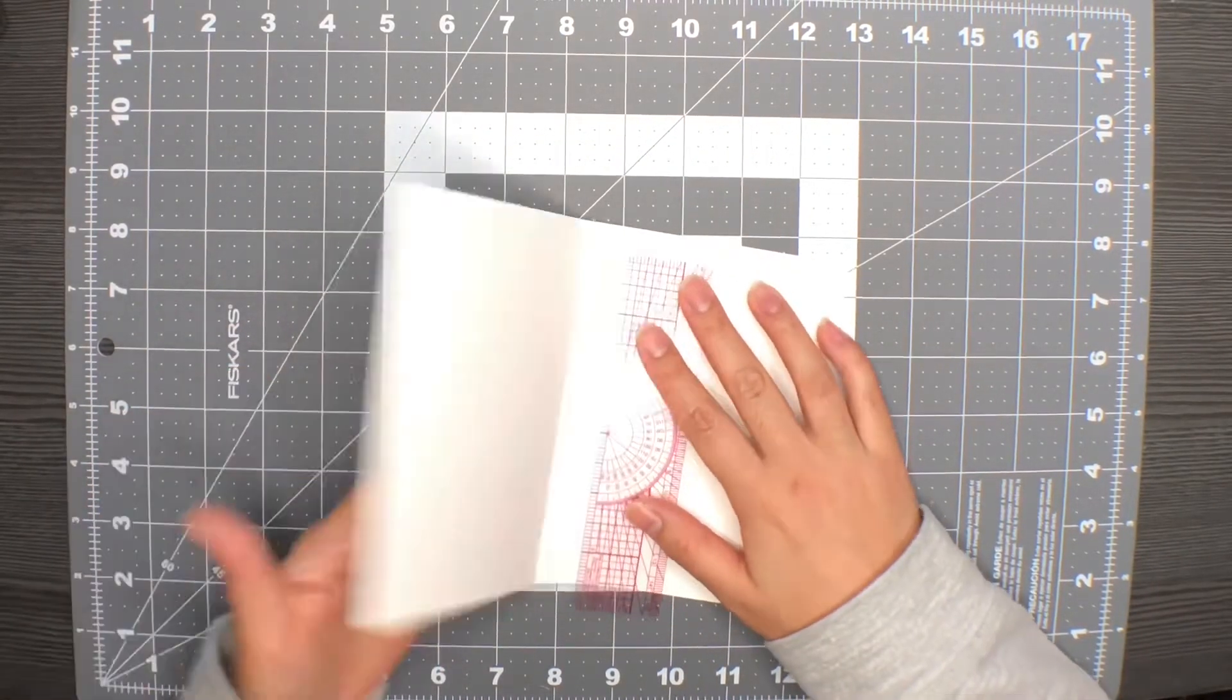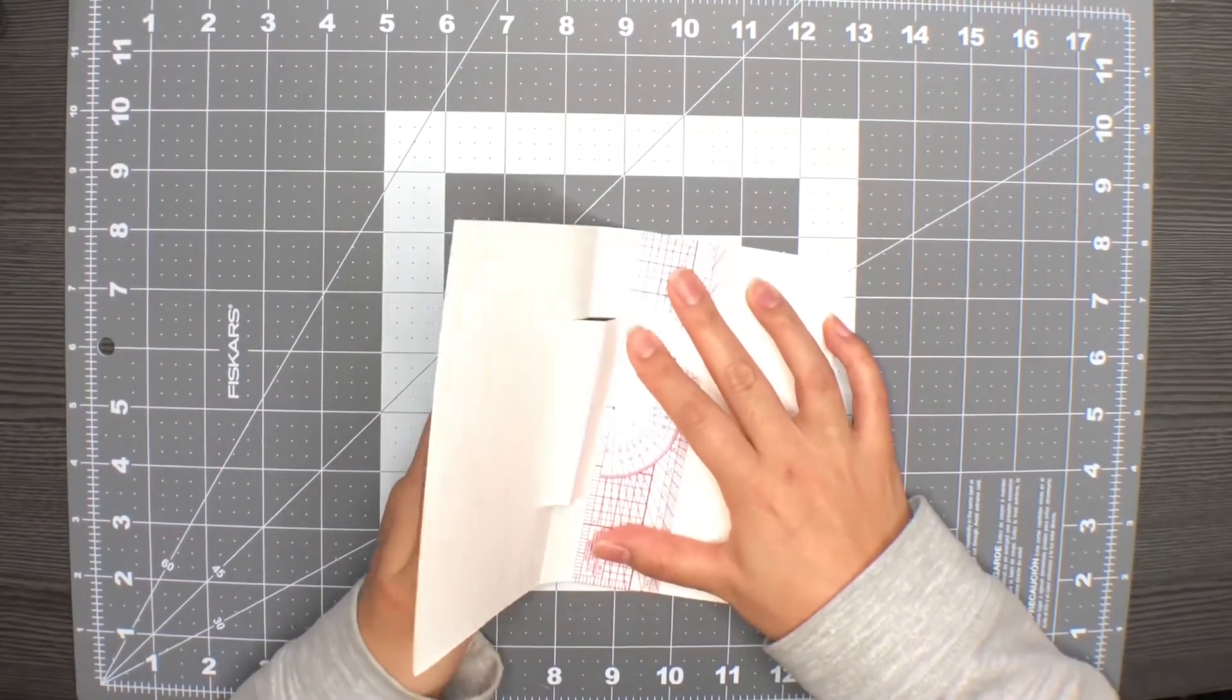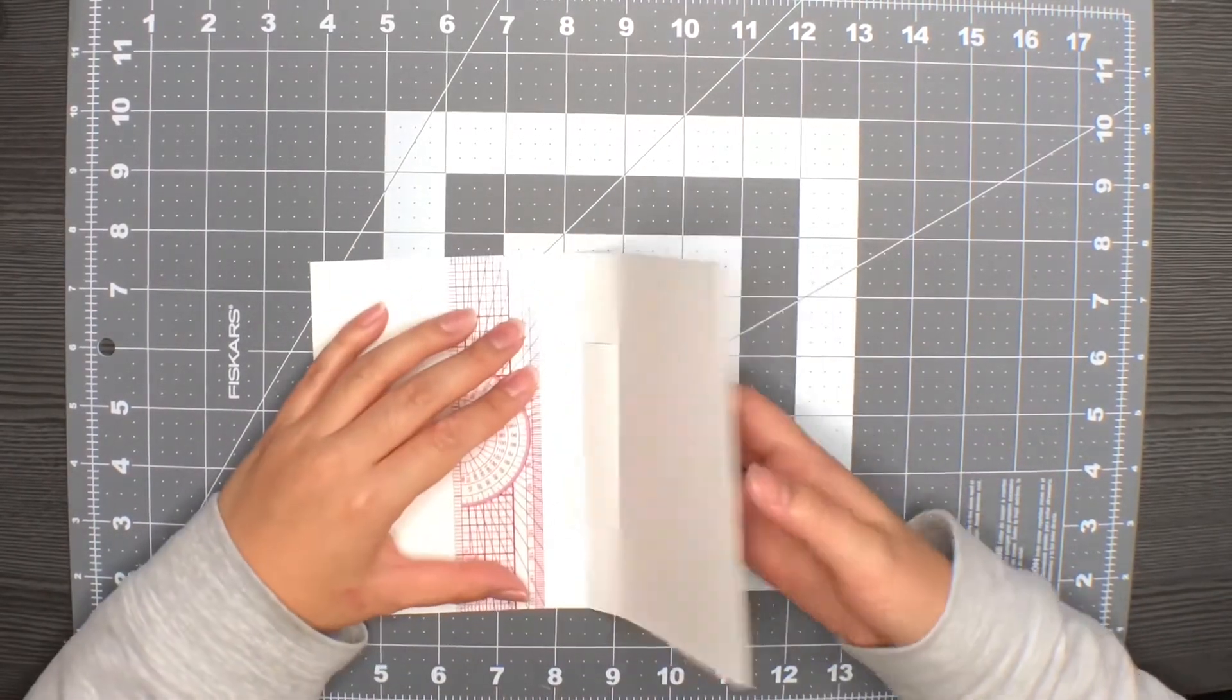Next, we will open the card and we're going to invert that middle section. Using the ruler, we're going to push that middle section in to create the crease and we will do it to both sides.